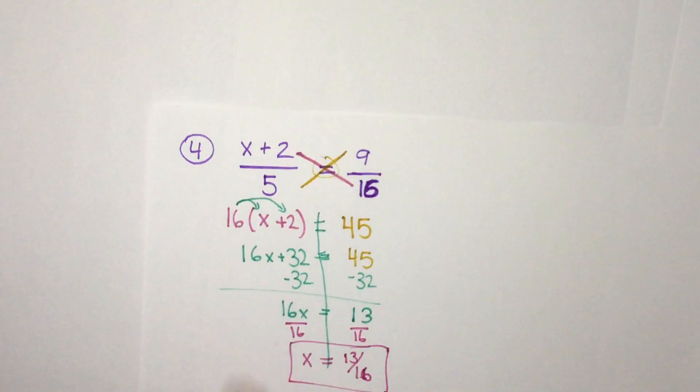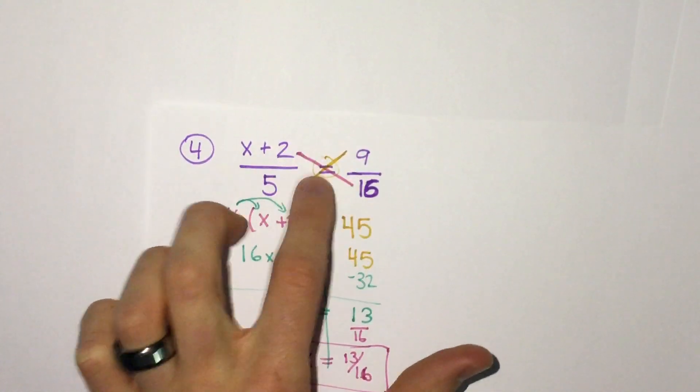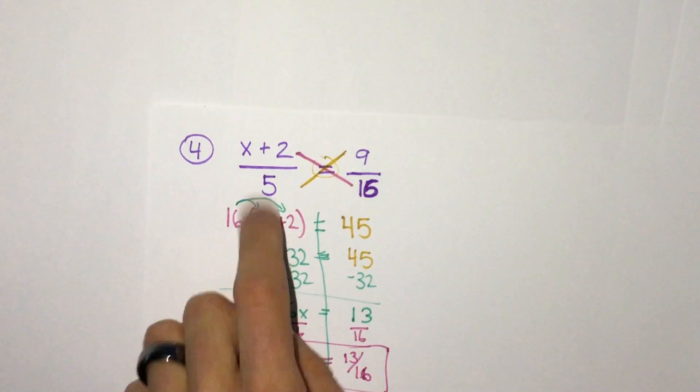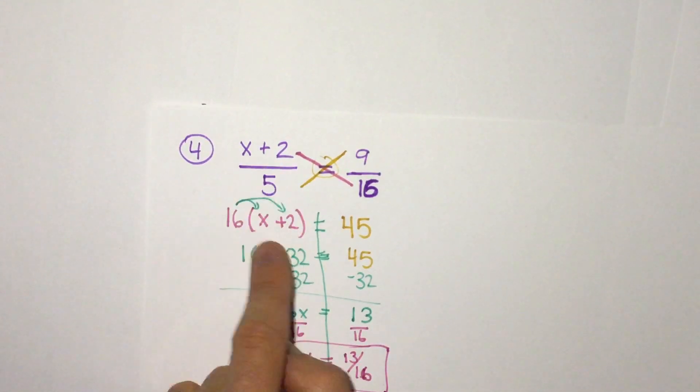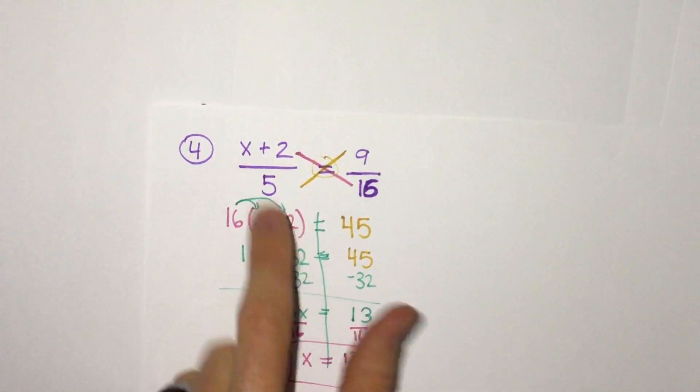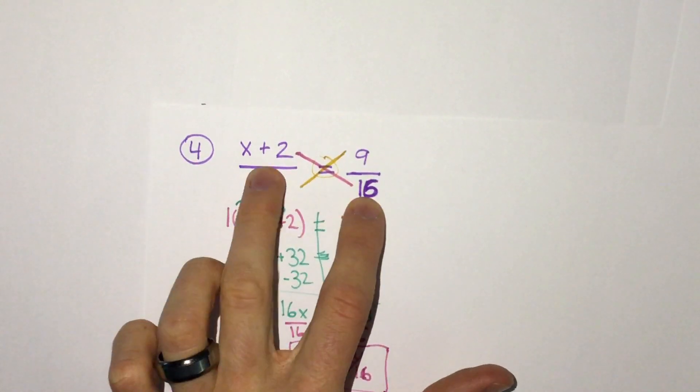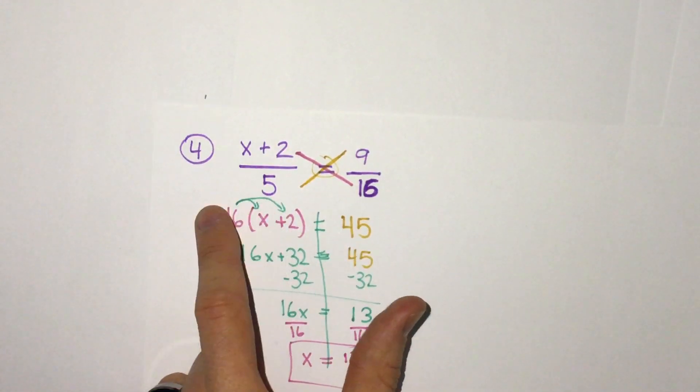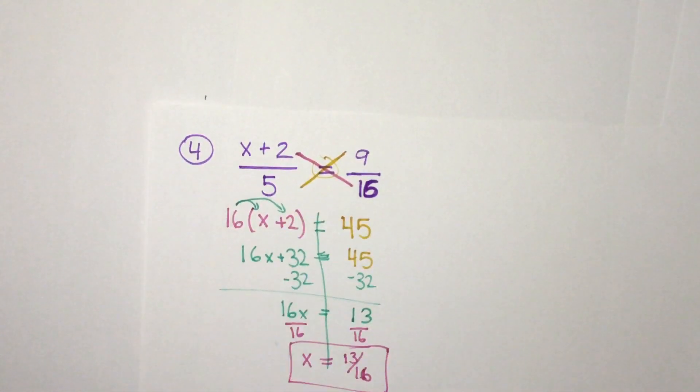So for one like this, remember, it's the same idea. If two fractions are equal, multiply the diagonals. Just remember, if there's more than one thing with x, you have to, if it's addition, use the distributive property. So put the addition or subtraction in parentheses, and then distribute the other number into those parentheses.